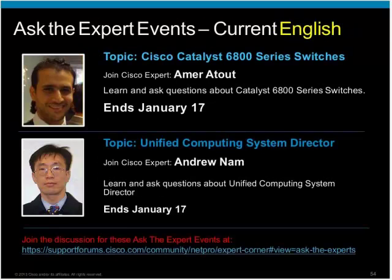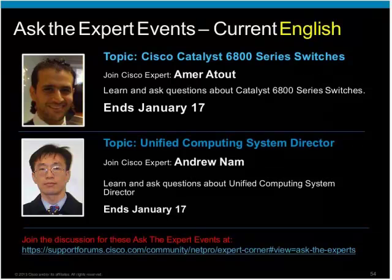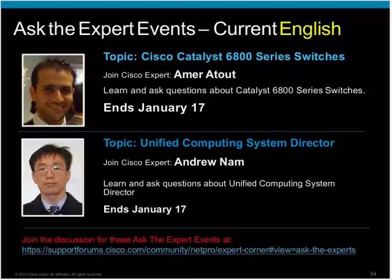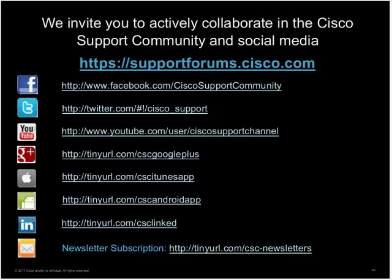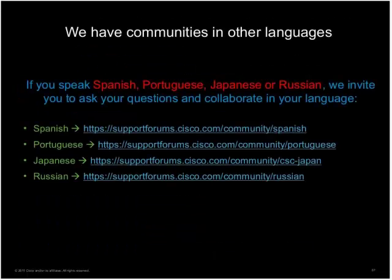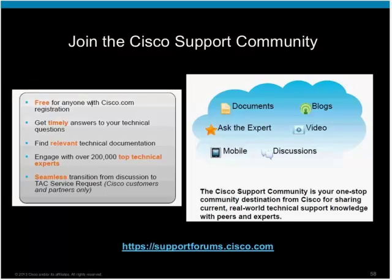These are some of the Ask the Expert events currently live in the community. If you go to the Expert Corner or from the homepage you can see these events. The first is on Cisco Catalyst 6800 series switches by Amar, and the second is Unified Computing System Director by Andrew. There is also an upcoming Ask the Expert event starting January 20th on Cloud Web Security on ASA. We invite you to actively collaborate in the Cisco Support Community — registration is free with a Cisco ID — and communities are available in Spanish, Portuguese, Japanese, and Russian.